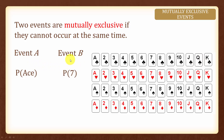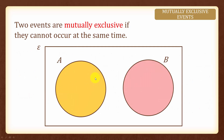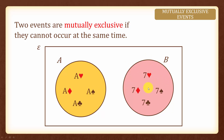Here we have 2 events: event A being getting an ace and event B being getting a 7. These 2 events are mutually exclusive because we do not have a card that is both an ace and a 7.